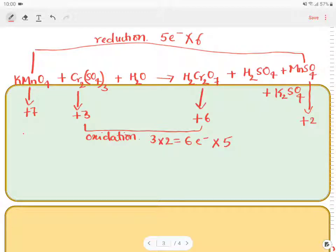Now you rewrite the equation. We get, you need to multiply by 6. 6 KMnO4.